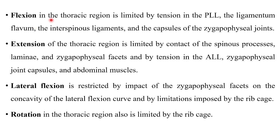Coming to flexion, thoracic flexion is limited by tension in the posterior longitudinal ligament, the ligamentum flavum, the interspinous ligaments, and the capsules of the zygapophysial joints. Extension is limited by the contact of spinous processes, the laminae, the zygapophysial facets, and tension in the anterior longitudinal ligament, zygapophysial joint capsules, and the anterior abdominal muscles. Lateral flexion is restricted by the impact of zygapophysial facets on the concavity of the lateral flexion curve and by limitations imposed by the rib cage. Rotation in the thoracic spine is also limited by the rib cage.